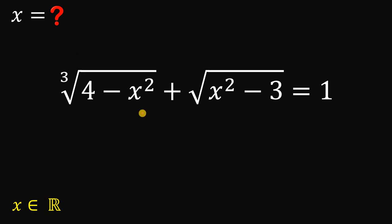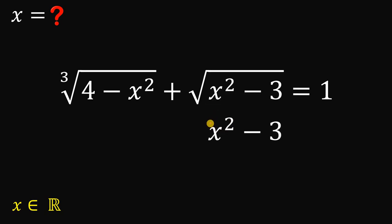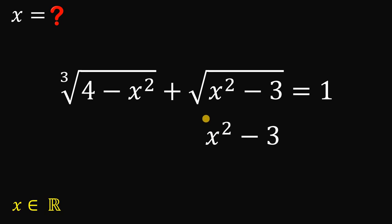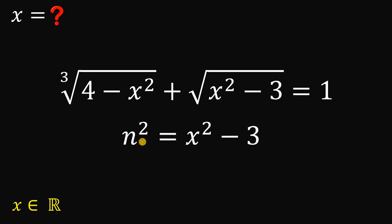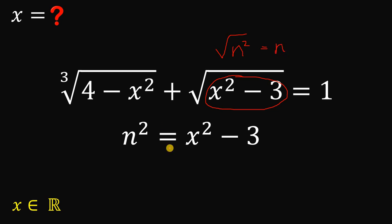To answer this question, we're going to focus on the term x squared minus 3 and replace it with the variable n squared. Why n squared? Because if we replace x squared minus 3 with n squared, then the square root of n squared becomes just n.